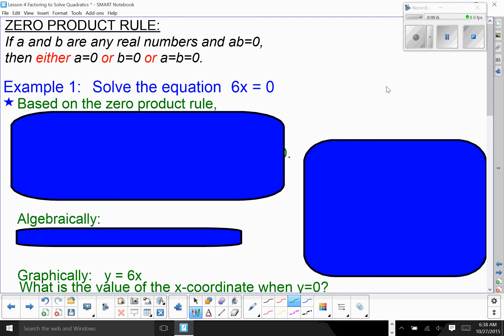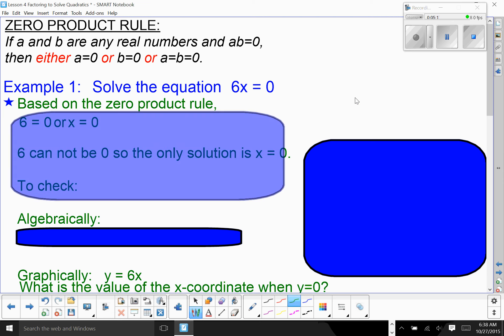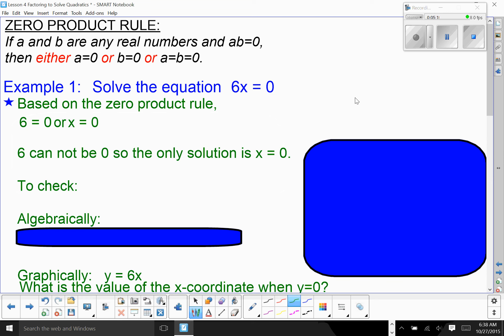So, once you actually get things factored, remember that to solve, you have to have the equation equal to zero. If I want to solve the equation 6x equals zero, based on the zero product rule, I have 6 times something is equal to zero. Either 6 is equal to zero or X equals zero. Since 6 can't be, X is my only solution.